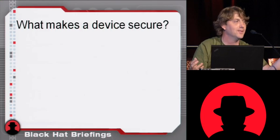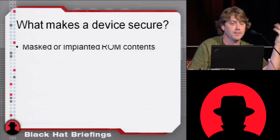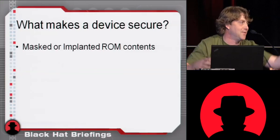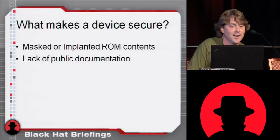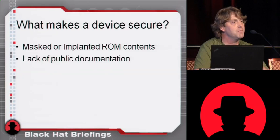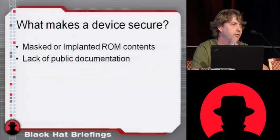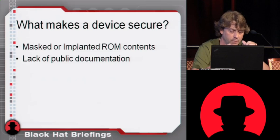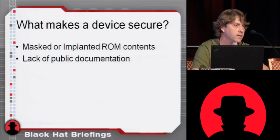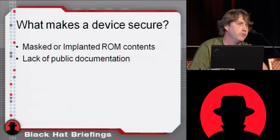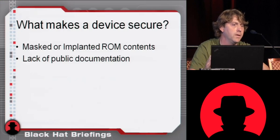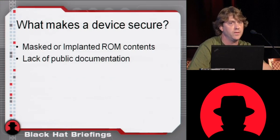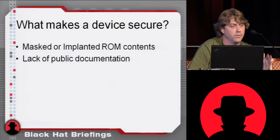So what makes a device secure? Masked implanted ROM contents. Lack of public documentation half the time — they try to control it. Maxim Dallas controls their documentation for their DS-2432, their 28-series one-wire devices, their SHA-1 authentication parts. Every smart card requires signing an NDA to get the documents. Philips NXP has these for their little transponder ICs. They try to control distribution of documents, and it does add a level of security — but if I can get these documents when I have no business having them, then obviously that's not a direction they should rely on.